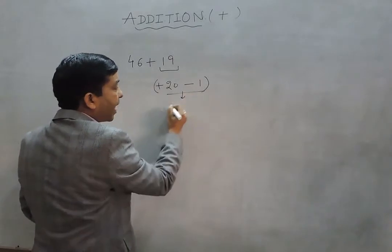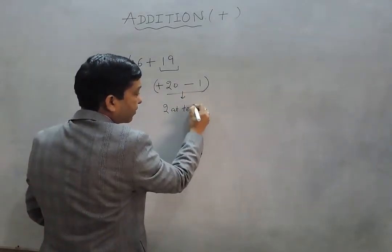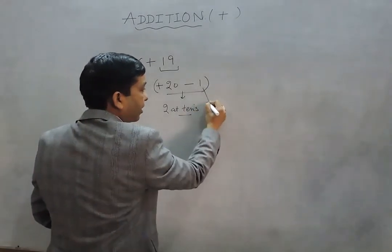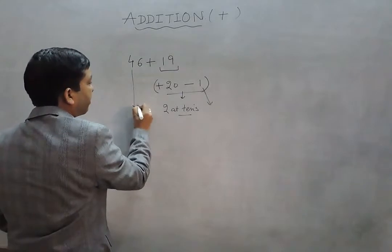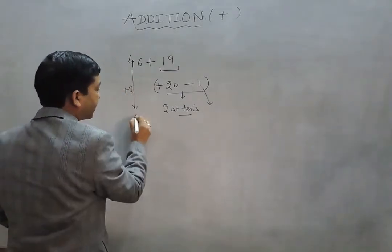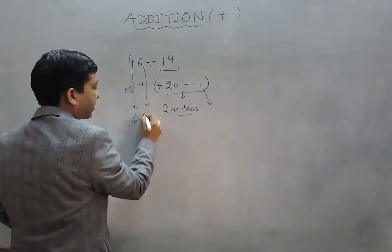This means we're adding 2 at the tens place and then subtracting 1 from the units place. If I add 2 to this number it gives us 6, and if I subtract 1 from this number it gives us 5.